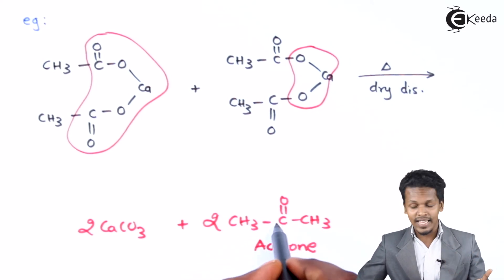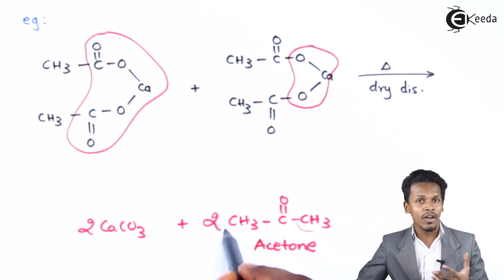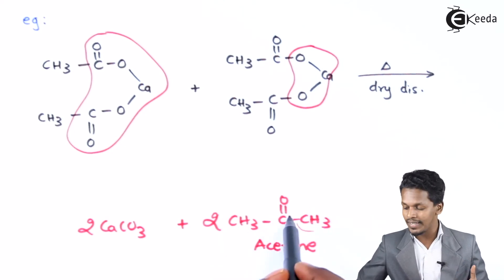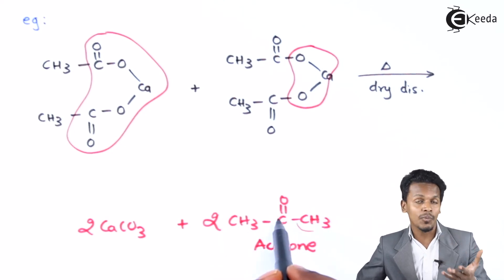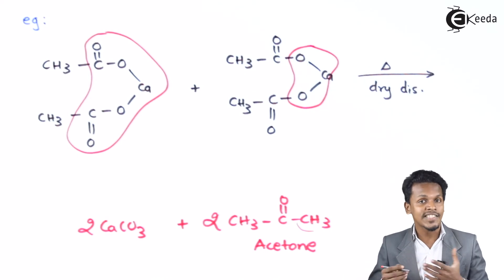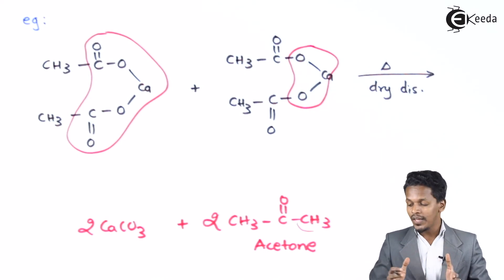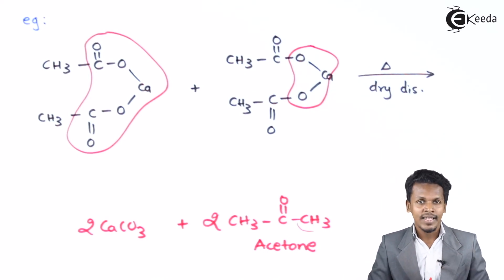In this case, the CH₃ or alkyl group is the same on both sides of the carbonyl, and that is what is known as a simple ketone. This is how we can prepare acetone.